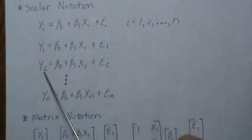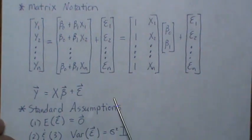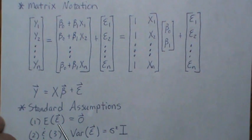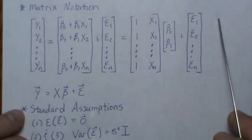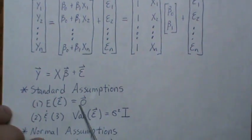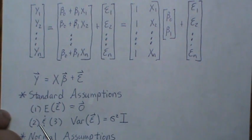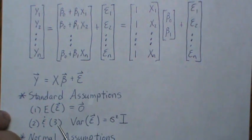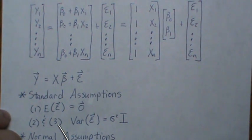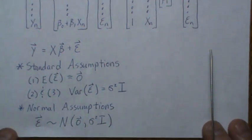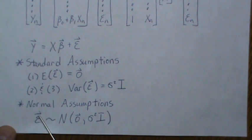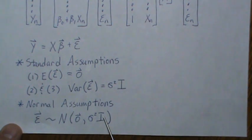The standard assumptions using matrix notation are: assumption one, the expected value of the epsilon vector is the zero vector, meaning each component has expected value zero. Assumption two, the variance of each epsilon is constant sigma squared, and the covariance between any two error terms is zero, so the variance of the epsilon vector is sigma squared times I, the identity matrix. The normality assumption becomes that the error vector is multivariate normally distributed with mean vector zero and variance-covariance matrix sigma squared I.